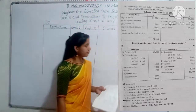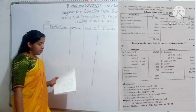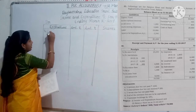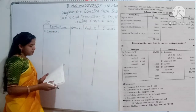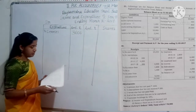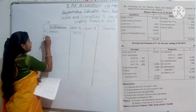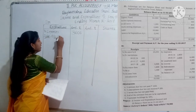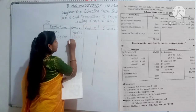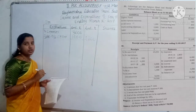Let's move on to the solution. Income and Expenditure Account for the year ending March 31st, 2017. First entry from payment side: expenses for 2016-17 Rs. 3,600. Adjustment entry: add outstanding current year expenses Rs. 1,000. Therefore, 3,600 plus 1,000 equals Rs. 4,600.